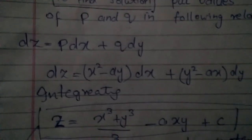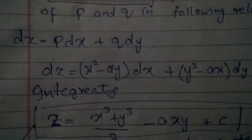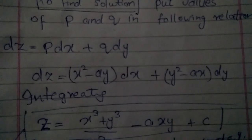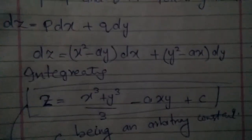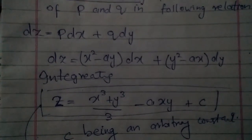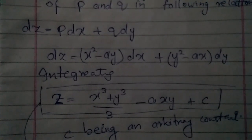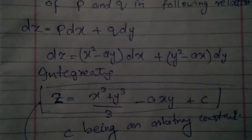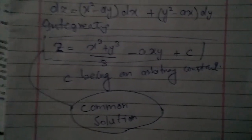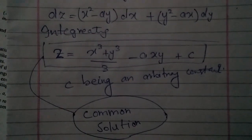Putting the given values of P and Q, we get dz and integrate. The result is z equals x cubed plus y cubed divided by 3 minus axy plus c, where c is an arbitrary constant. The result after integrating is called the common solution.